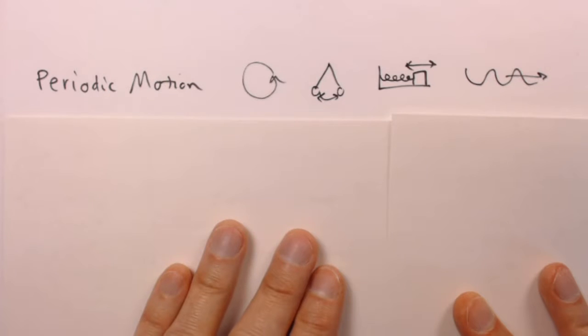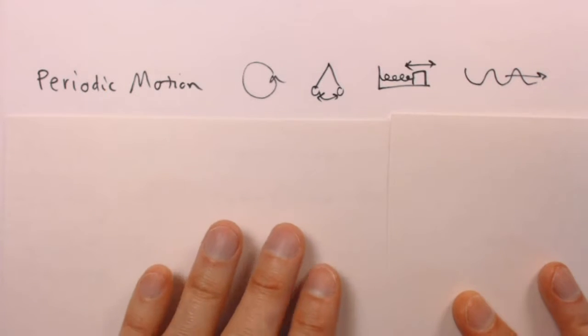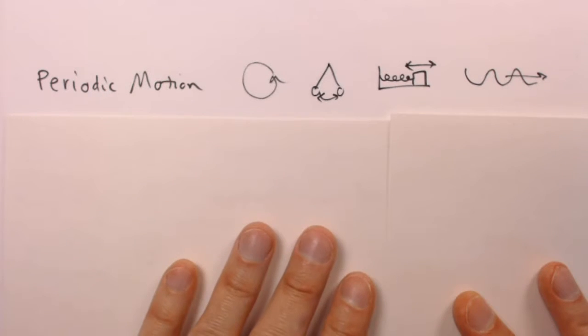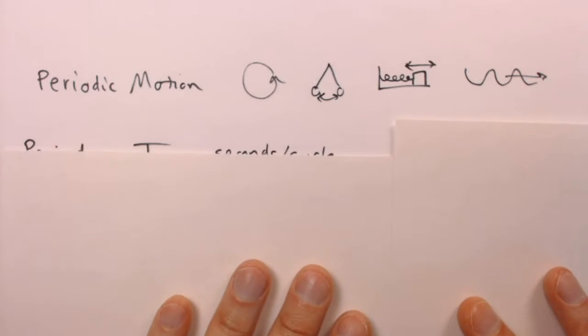Three terms commonly associated with periodic motion include period, frequency, and angular frequency. Let's start with period.